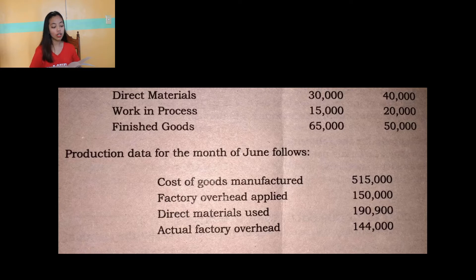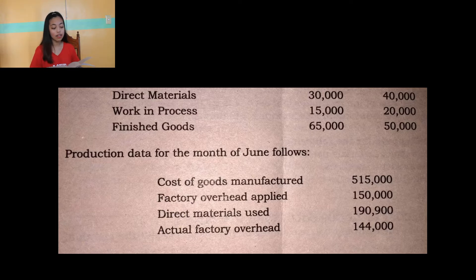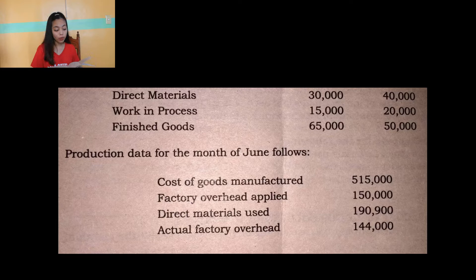Production data for the month of July are as follows: cost of goods manufactured P515,000, factory overhead applied of P150,000, direct materials used of P190,900, and actual factory overhead of P144,000. The only requirement is to compute the cost of goods sold under actual costing.